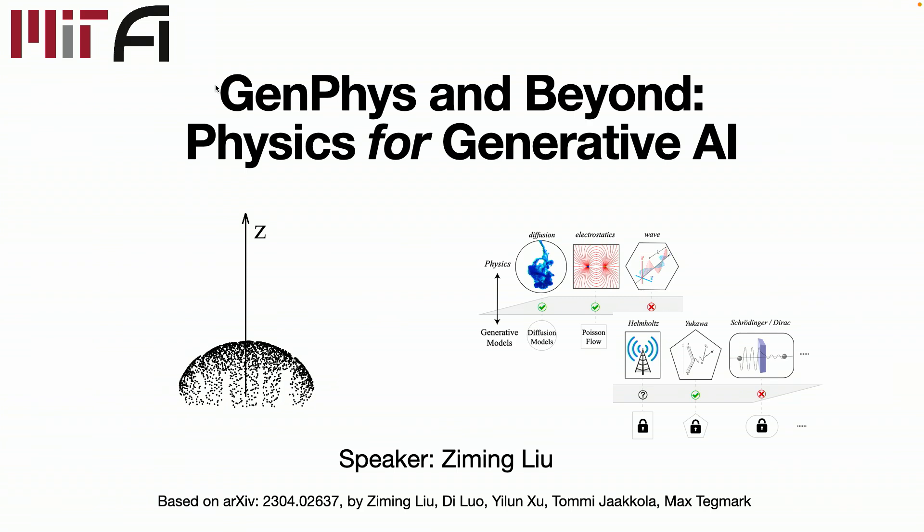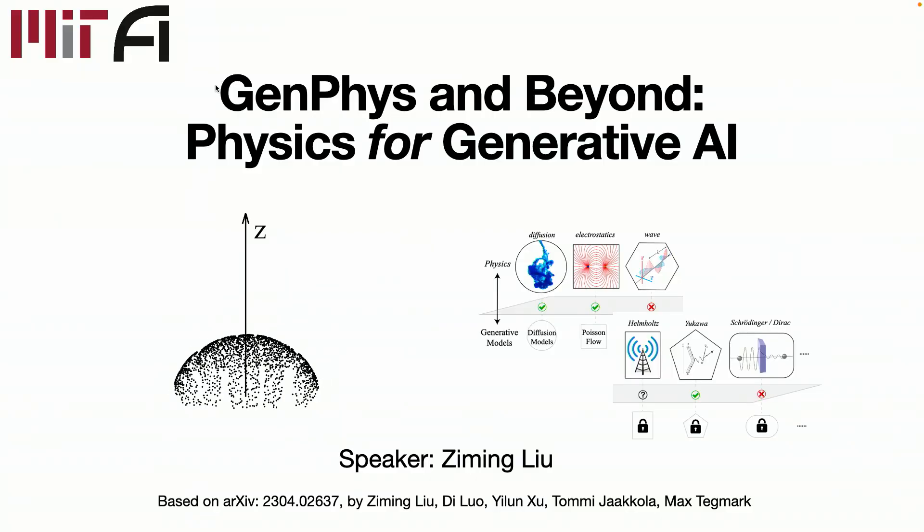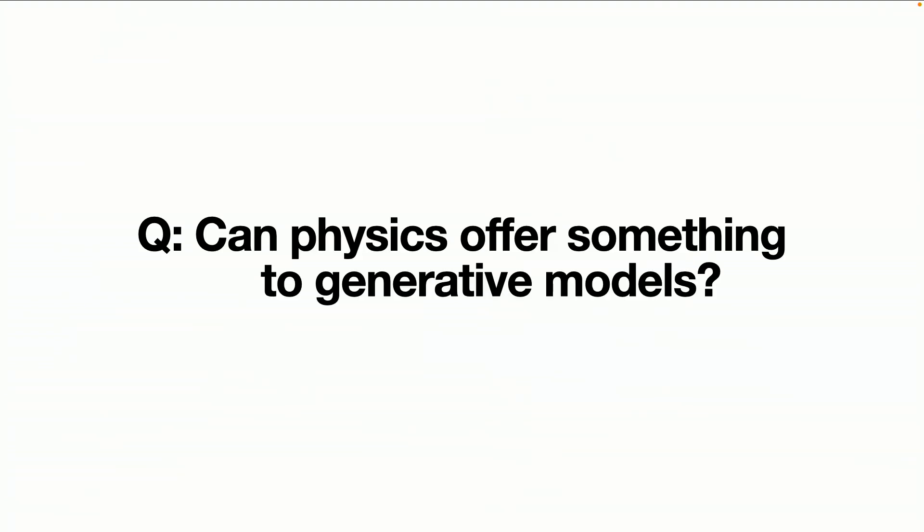People have talked about how generative AI can transform the education of physics. I'm going to talk about the other way around, how physics can transform generative AI in a technical way. So the question I want to ask is, can physics offer something back to generative models?